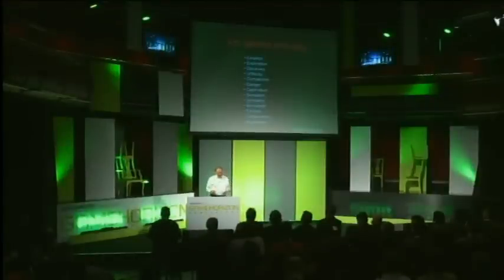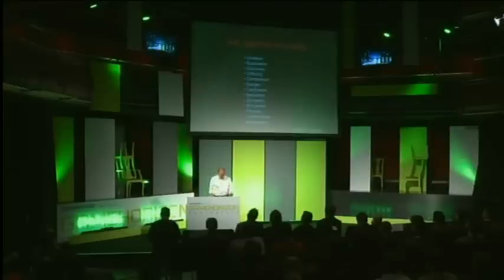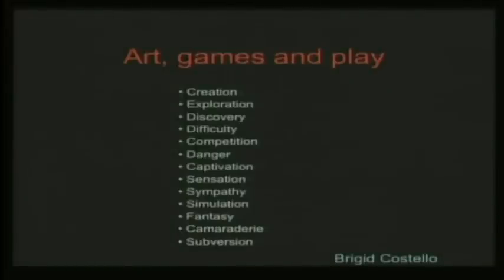What came out of this was an understanding that the experience people have in playing with something like an artwork or a game is actually much more complex and varied than we often realise. Here's a list of different categories of experience people might have: a creative experience, an experience of difficulty, complexity, struggling with something, danger, and so on. The point is that when designing this interactive experience, we have to have in mind what kind of experience we're going for. The interactive design of the system will be different depending on which kind of experience we want to enable.